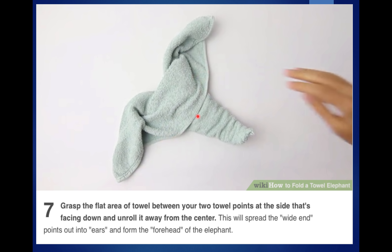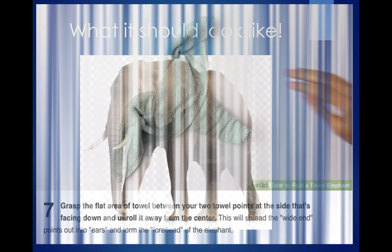Once you've done that, you're going to grasp the flat area of the towel between your two tail points at the side that's facing down, and unroll it away from the centre. This will spread the wide end points out into ears and the forehead of the elephant. Very difficult, this — if someone does this, I'll be very impressed. And that's what it should look like once you've finished, hopefully.